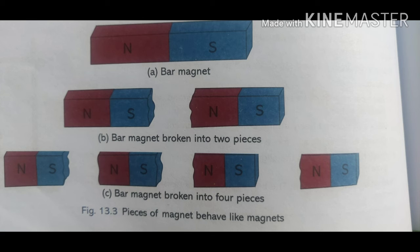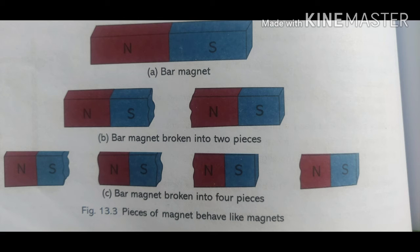Magnetic compass is a device which is used to find direction. It is used by sailors, sea voyagers, and trekkers. It uses magnetic properties to find the direction.